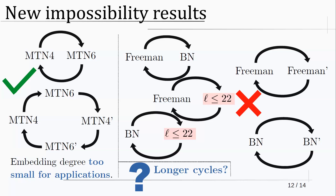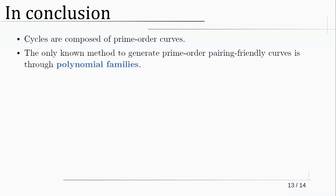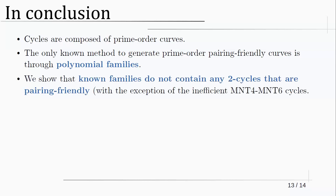We still don't know what's happening with longer cycles — it might still be the case that they exist. In summary: if we're looking for cycles, we need prime-order curves. The only approach we know to get prime-order and pairing-friendly curves is through these polynomial families. What we've shown is that these polynomial families do not contain any new cycles beyond the MNT ones already known, which were pretty inefficient.